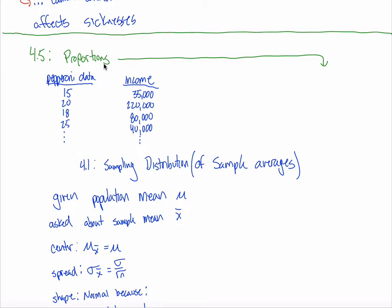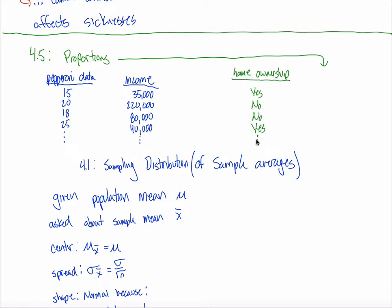With binary categorical data, each observation in your data set is a yes or a no. Instead of household income, maybe it's: do you own your house? I randomly select 50 adult males aged 30 to 50 in Oregon and ask if they own their home. The first person says yes, the second says no, third no, then yes. All my answers are just yeses or nos. I don't care how many homes you own — it's a yes or no question. It's categorical data, not numeric.